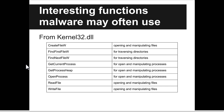Here are interesting functions from kernel32.dll that malware may often use: functions for creating, reading, and writing files. FindFirstFileW and FindNextFileW are used for traversing directories — find the first file, then the next and the next, iterating through. Then GetProcessHeap and OpenProcess, which are all used for manipulating processes.